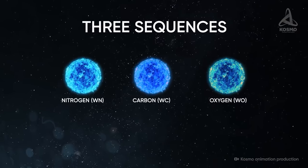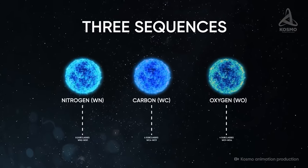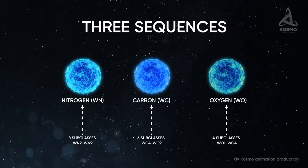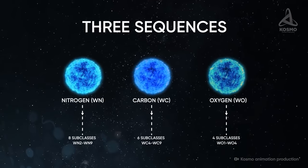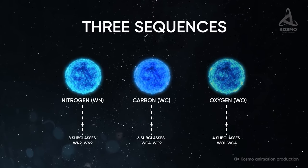Wolf-Rayet stars are subdivided into three main sequences depending on the prevalent element in the spectrum: nitrogen, carbon and oxygen sequences. Each of them, in its turn, is subdivided into several types. As for the hottest star in the studied universe, it falls into the category of the oxygen spectral sequence ones.